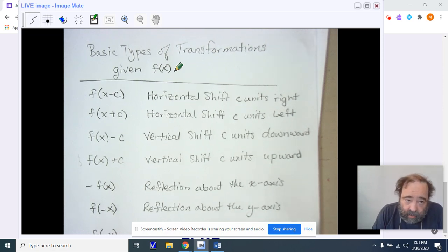They are exactly what you would expect. The basic types of transformations given in f of x are f of x minus c. This represents a horizontal shift c units to the right. f of x plus c represents a horizontal shift c units to the left. f of x the quantity minus c represents a vertical shift c units downward. f of x the quantity plus c represents a vertical shift c units upward.